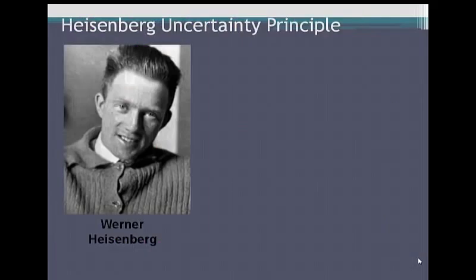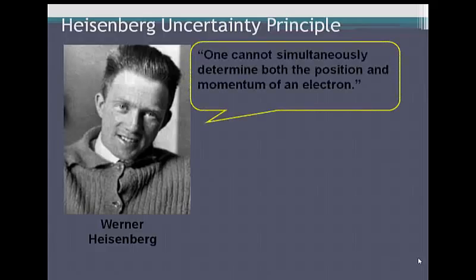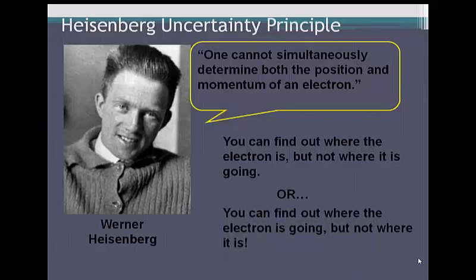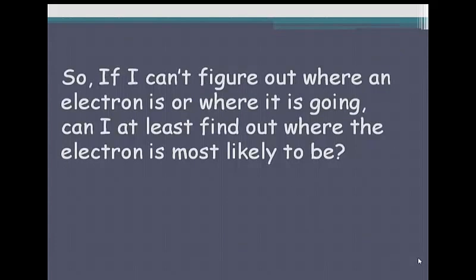Werner Heisenberg also came up at the same time with something called the uncertainty principle. What Heisenberg said is that one cannot simultaneously determine both the position and the momentum of an electron. You can find out where the electron is or where it's going, but not both. So, if I can't figure out where an electron is or where it is going, can I at least find out where the electron is most likely to be?